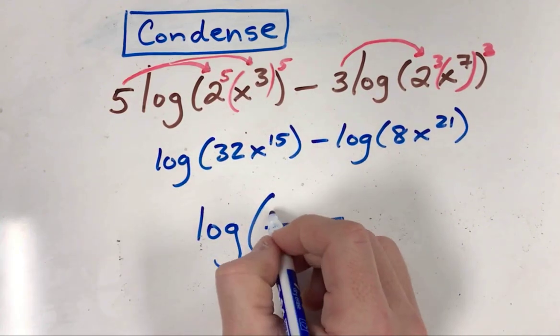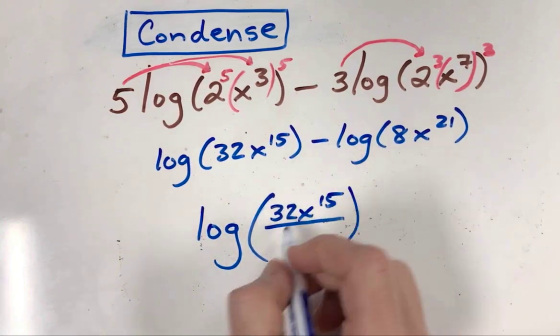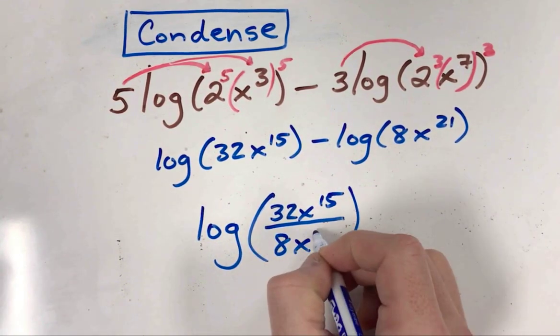This is the positive log, so that's thirty-two x to the fifteenth on top, and eight x to the twenty-one on the bottom.